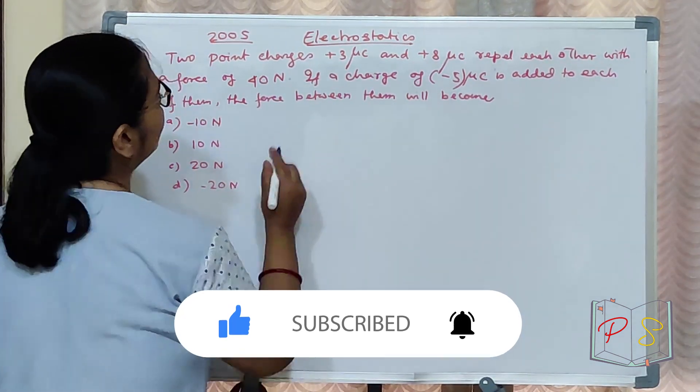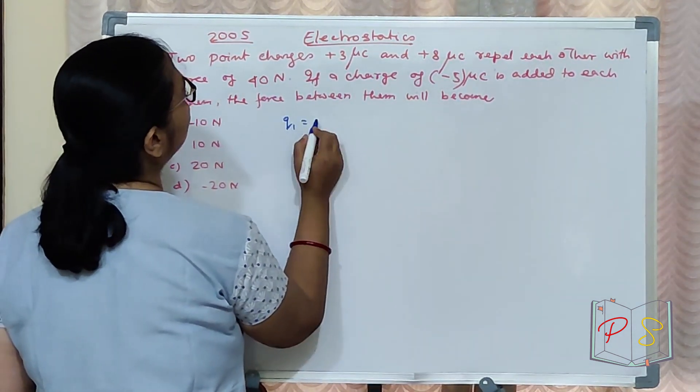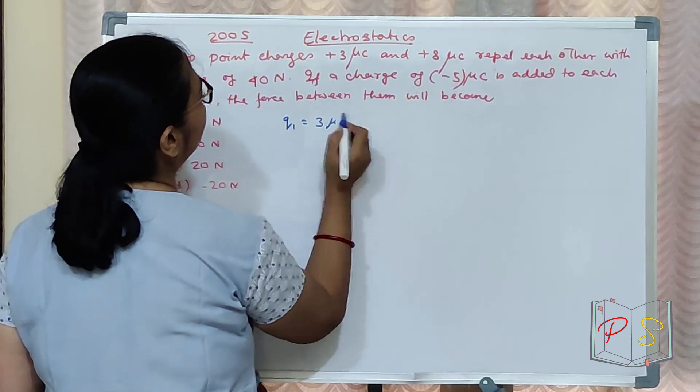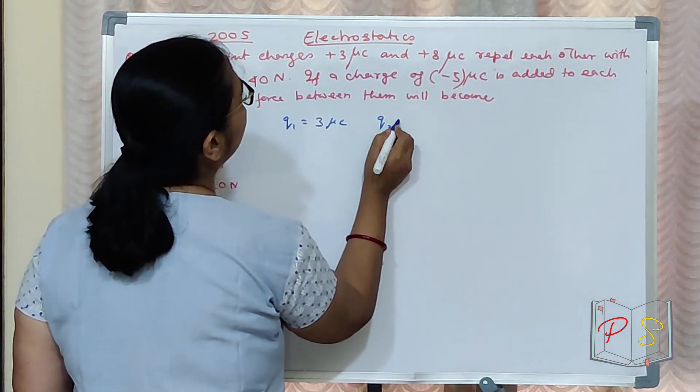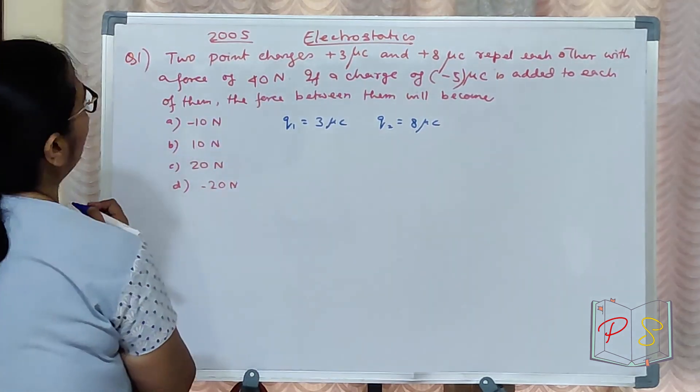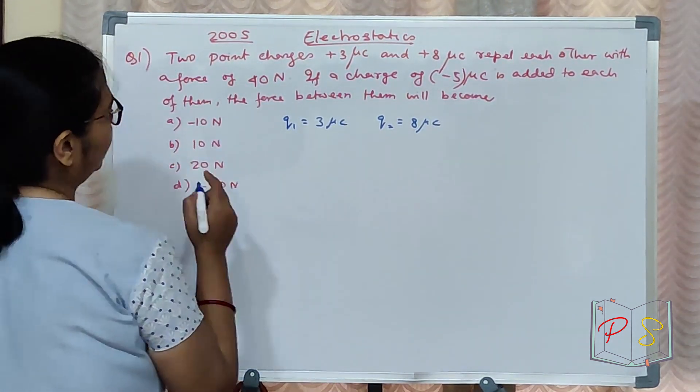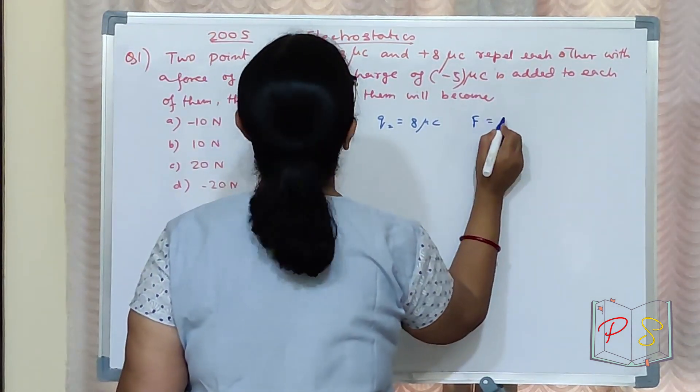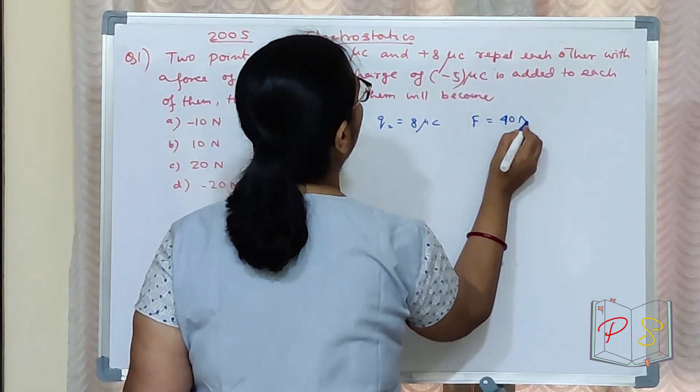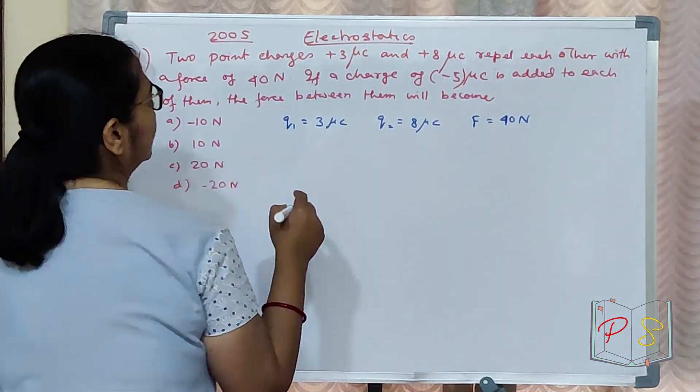Two point charges: Q1 equal to 3 micro coulomb, Q2 equal to 8 micro coulomb. They have a force in between them, F equal to 40 Newton.